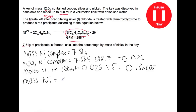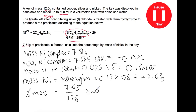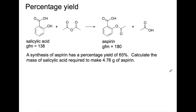That turns out to be 0.13 moles. We find the mass of nickel by doing moles times gram formula mass — the gram formula mass of nickel is 58.7 — giving 7.63 grams of nickel. Using the percentage mass equation: 7.63 grams divided by 12.5 grams for the key, times 100, gives a percentage by mass of nickel in the key of 61.1%.